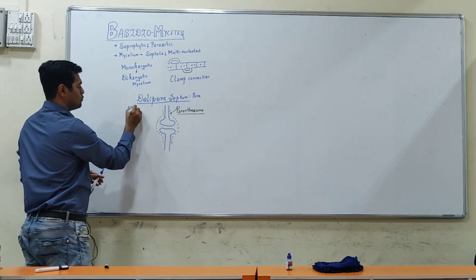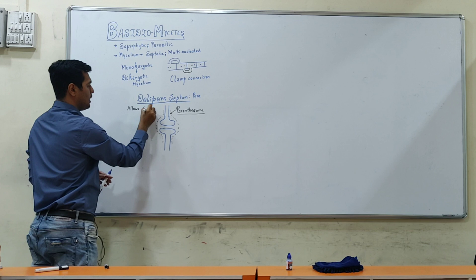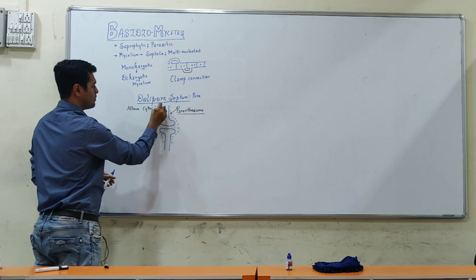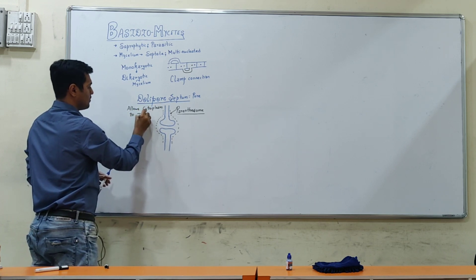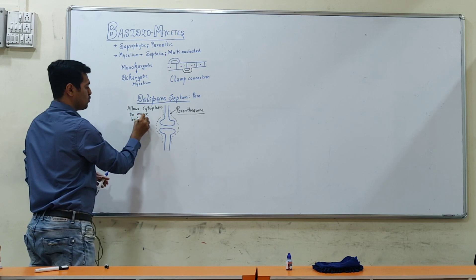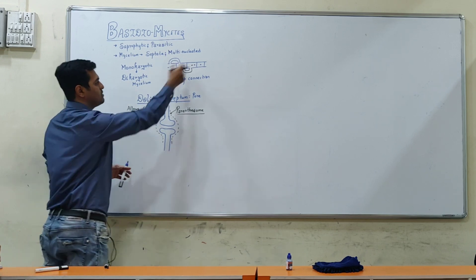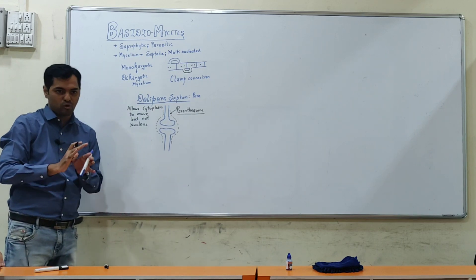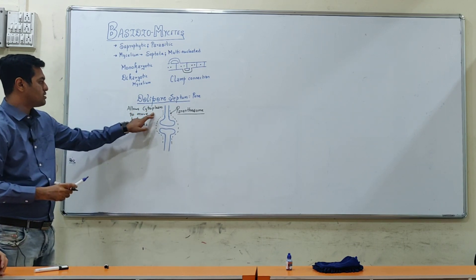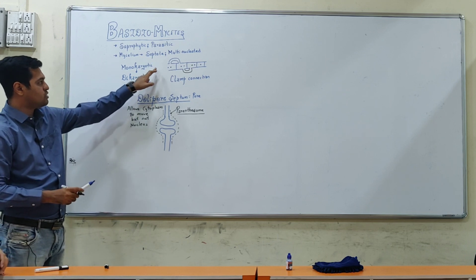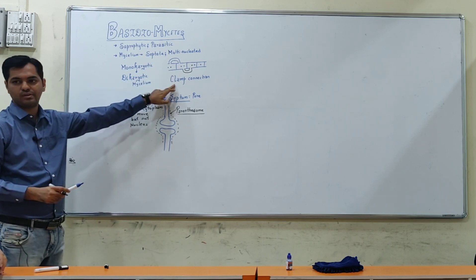That is the boundary between the dolipore septum. This pore's characteristic is it allows cytoplasm to move but not nucleus. Nucleus it will not allow, because if it allowed nucleus the mycelium would become dicaryotic. Nucleus it won't allow, cytoplasm it allows and multi nucleated cells are forming through clamp connection.